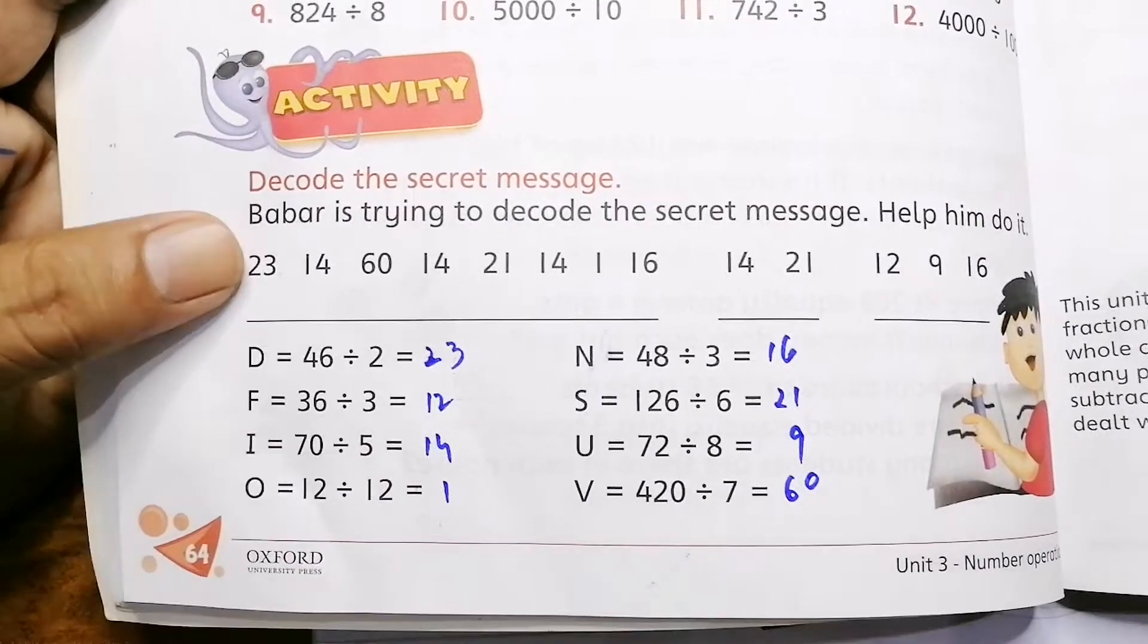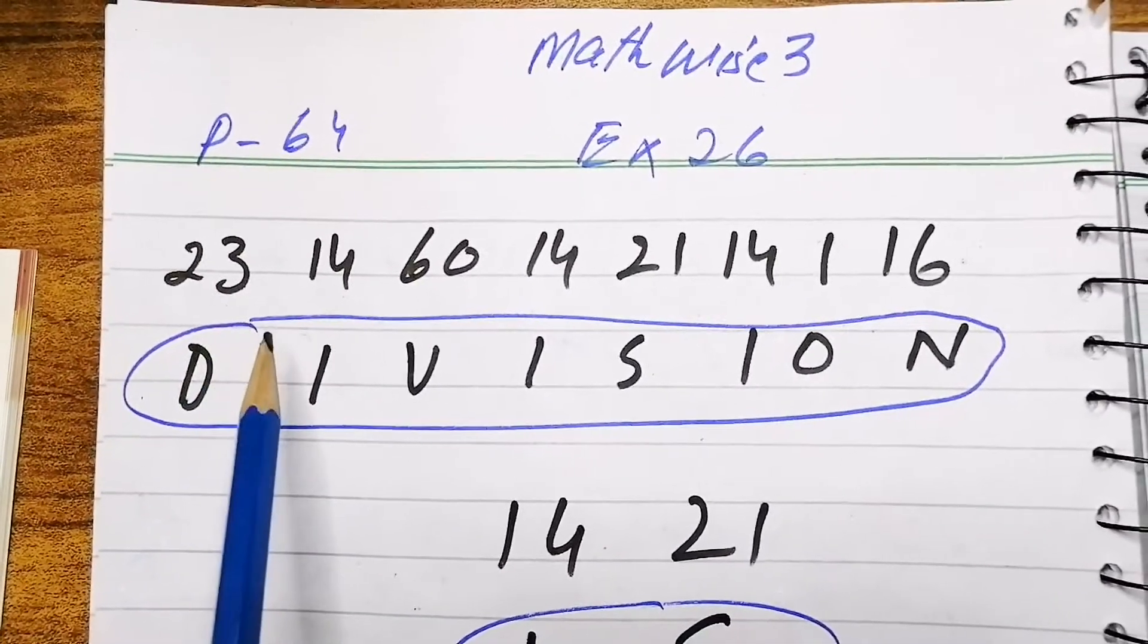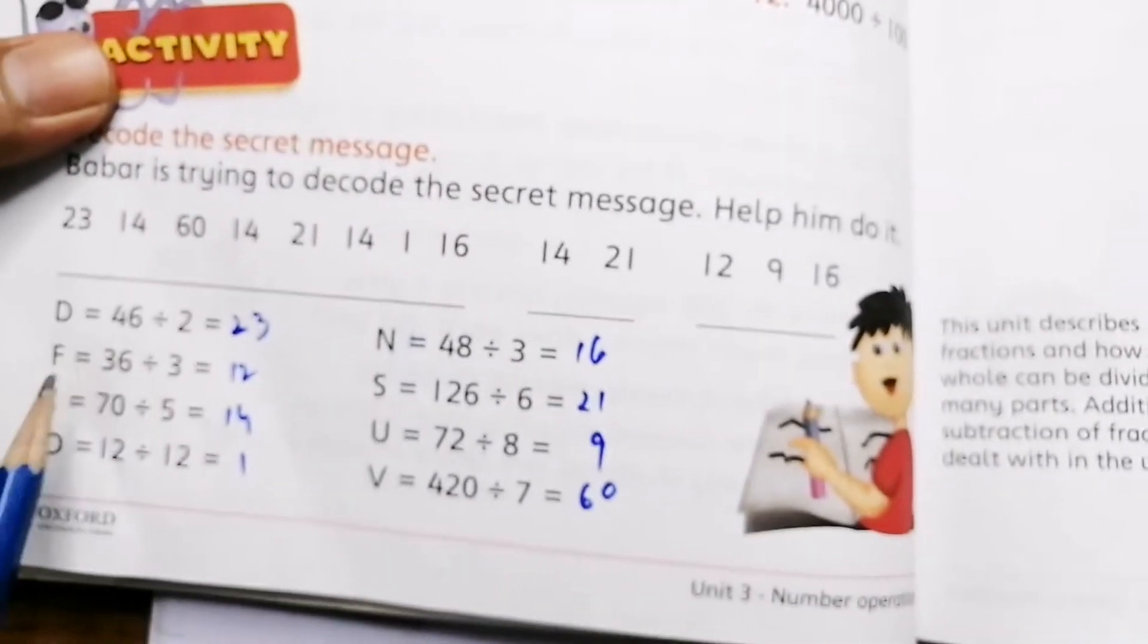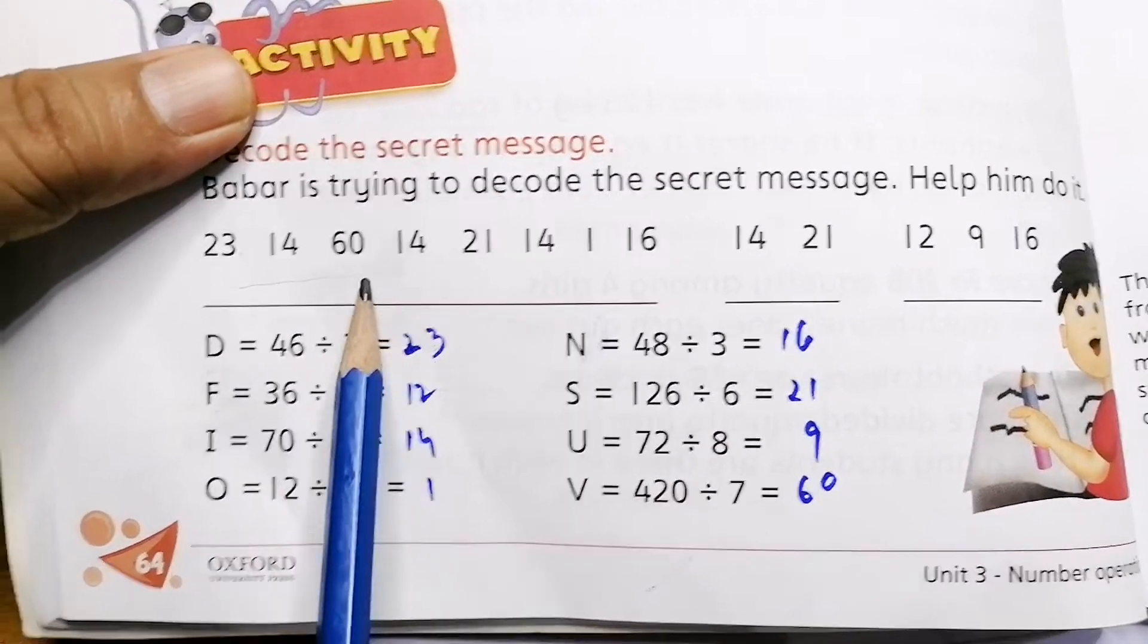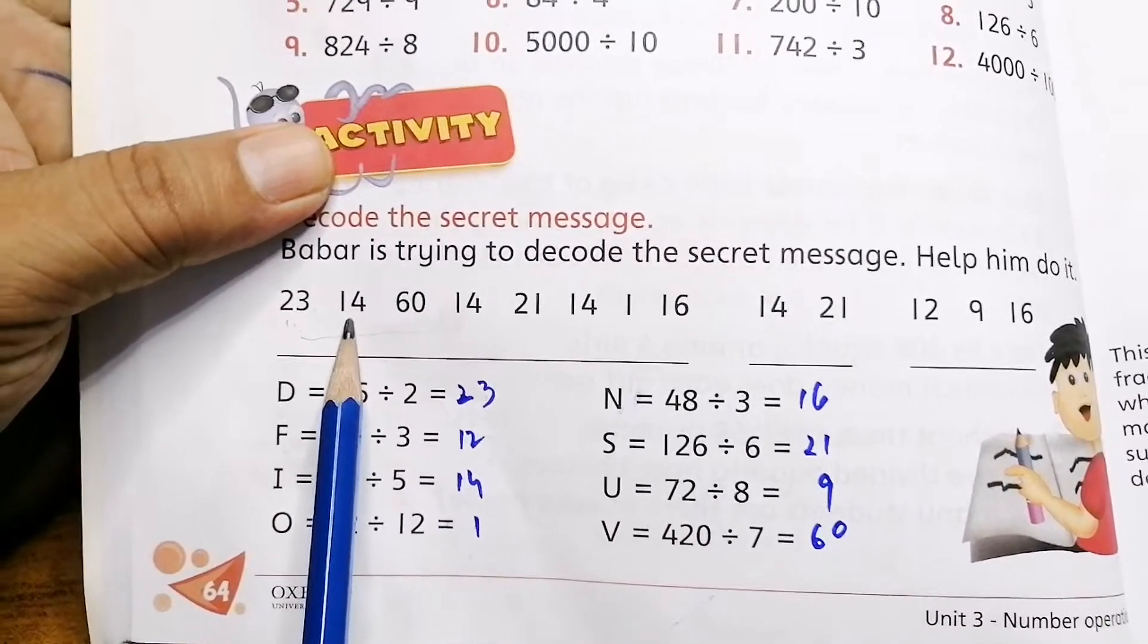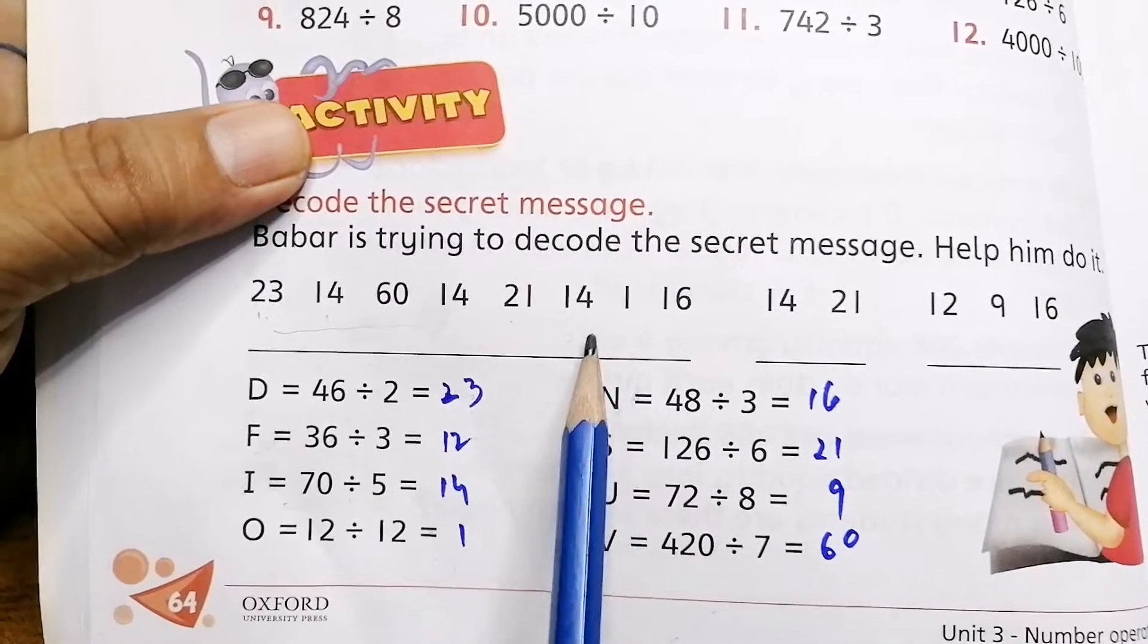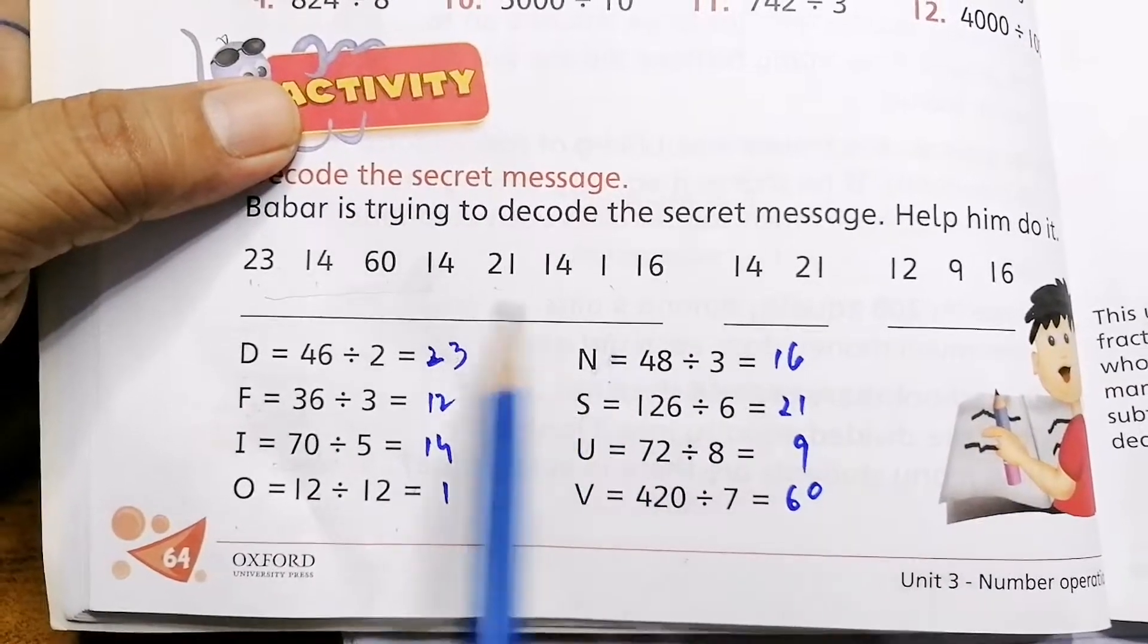We have written these answers, and then it is a secret message. We have to disclose this. We have arranged numbers as it is written in your book: 23, 14... Then simply the answers given here - like the answer of D, answer of F, answer of I, answer of O, N, S - all these answers we write here under these. 23 is D, 14 is I, 60 is V, 14 is again I, 21 is S, 14 is again I, 20 is O, and 16 is N. It makes division.